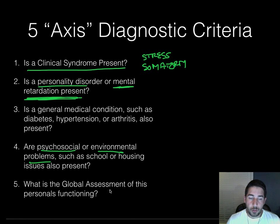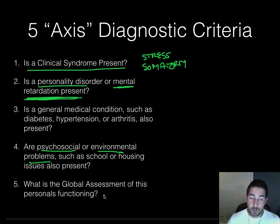Finally, the fifth axis is a global assessment of personal functioning — how well is this person functioning overall — rated on a scale of one to one hundred.